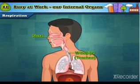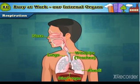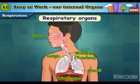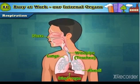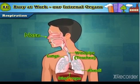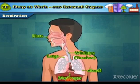The organs that carry out the function of respiration in our body are the nose, windpipe (trachea), lungs, alveoli, and the diaphragm. These are called the respiratory organs. The respiratory system begins with the nose. When we inhale, the air we take in through the nose enters the trachea.